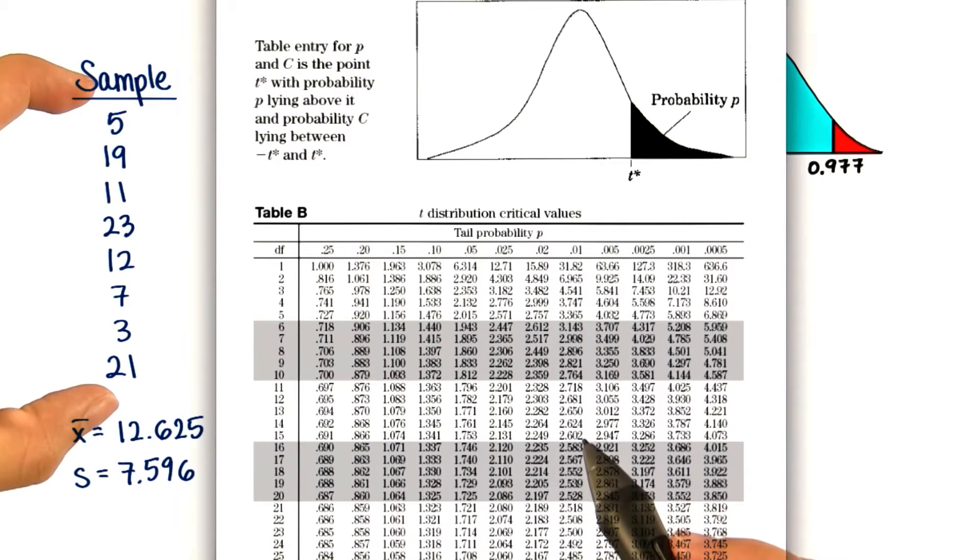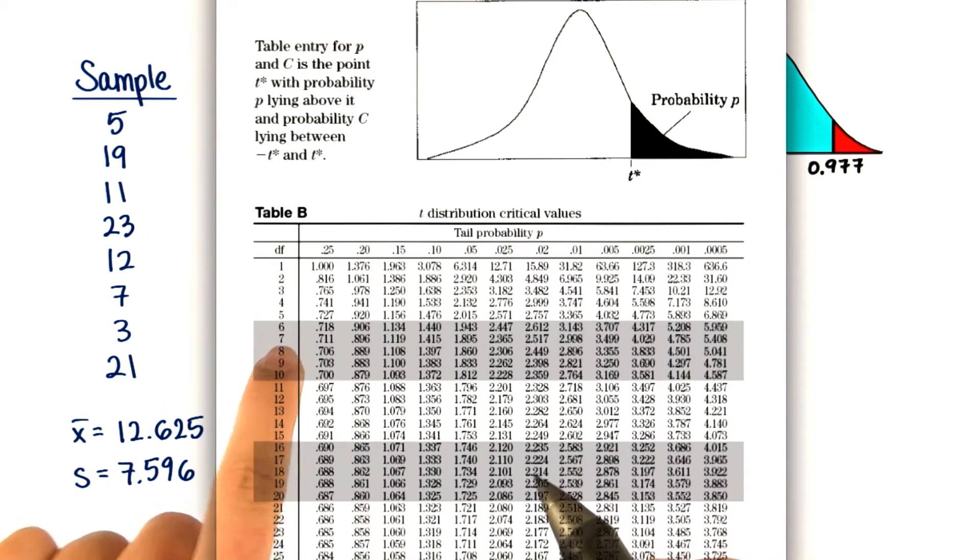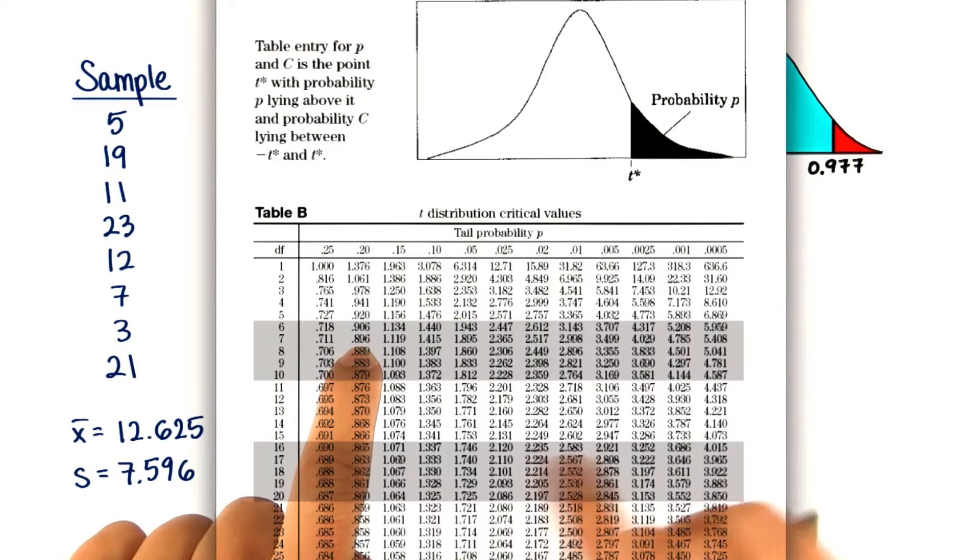Since our sample has 8 values, we have 7 degrees of freedom, and our t statistic is in between 0.896 and 1.119. That means the upper tail of our p-value would be between 0.15 and 0.20, and so would the lower tail of our p-value.